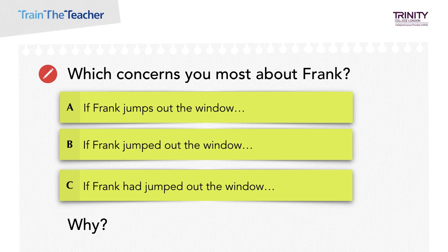You probably said A. And why is this? Because in order from A to C, the sentences go from likely to unlikely to impossible.